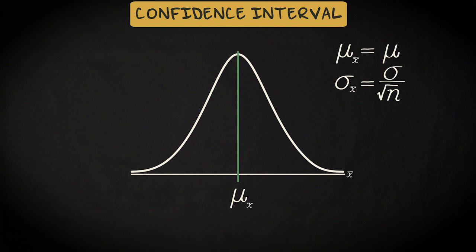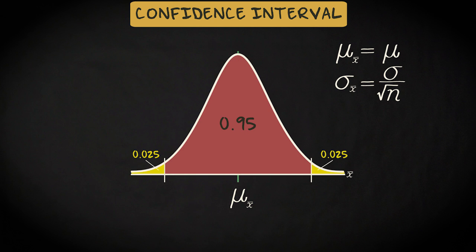We also know that the probability of finding a sample mean of less than about 2 standard deviations from the mean is 0.95. More precisely, if we look up the z-scores which correspond to this probability, we'll find values of minus 1.96 and 1.96. This means that we have a 95% chance that our sample mean will fall within 1.96 standard deviations of population mean mu.